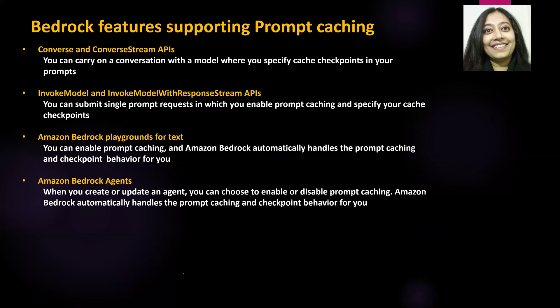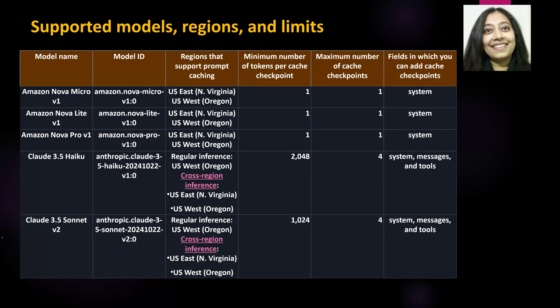Now let's look at some of the features in Bedrock that support prompt caching. The first ones are the Converse and Converse Stream APIs. You also have Invoke Model and Invoke Model with Response Stream APIs. Along with that, we also have Amazon Bedrock Playground for text and chat, which also supports prompt caching — and by far this is going to be one of the easiest ways to play around and understand how prompt caching works. You also have Bedrock agents that support prompt caching.